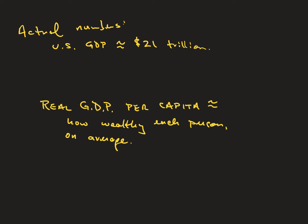When you hear there's a government expenditure package that will cost two trillion dollars, that means about a tenth of what the U.S. economy produces will go toward government expenditures. Real GDP per capita is kind of a measure of how wealthy a person in a country is on average, but it's not a perfect measure. I've brought up three ways it would be appropriate to adjust GDP: real — adjust for inflation; per capita — adjust for population size; PPP — adjust for cost of living. But it's still not perfect.